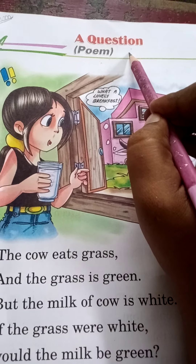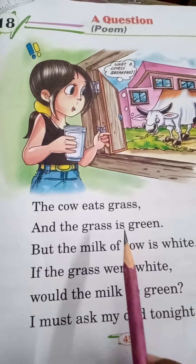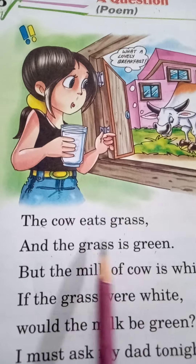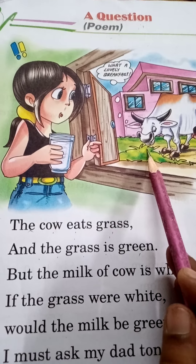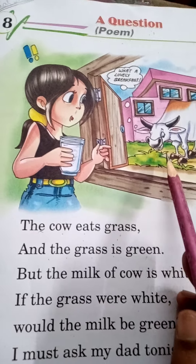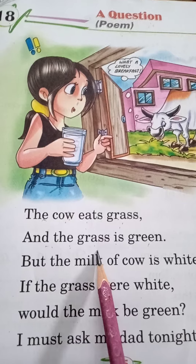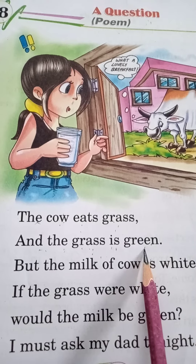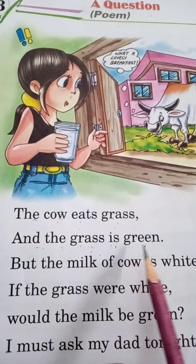So what is the question? Now we read in this poem: the cow eats grass and the grass is green. Who eats grass? The cow eats grass. What does the cow eat? Grass. The grass is green. What is the color of grass? The grass is green. The cow eats grass and the grass is green.